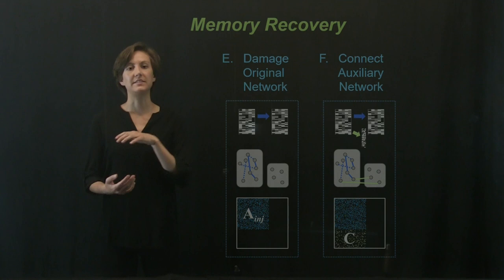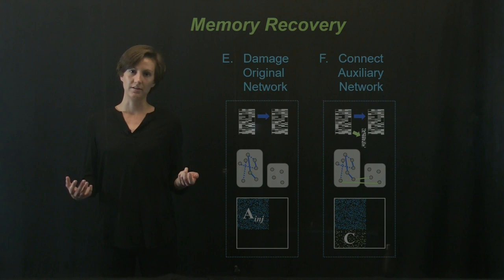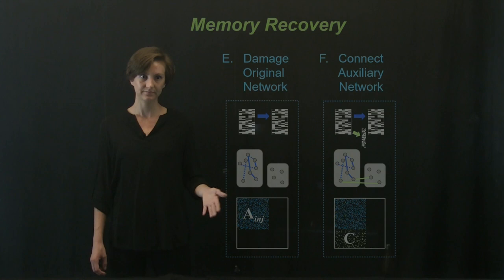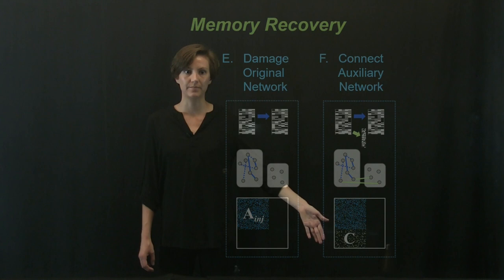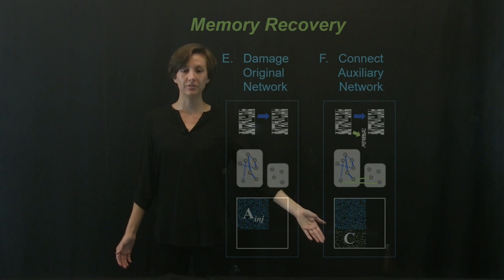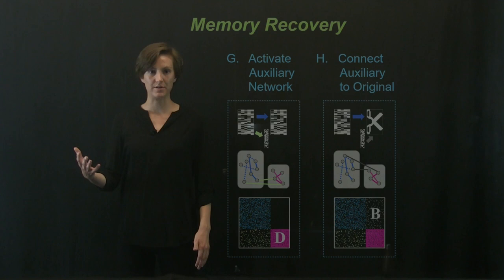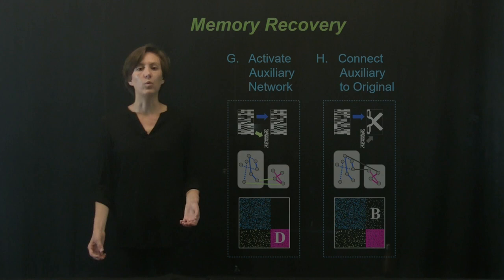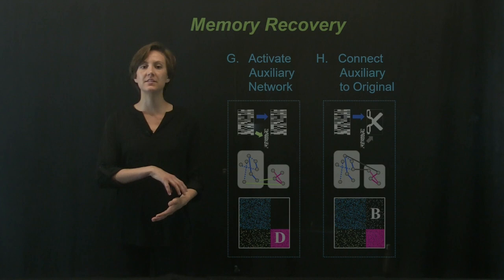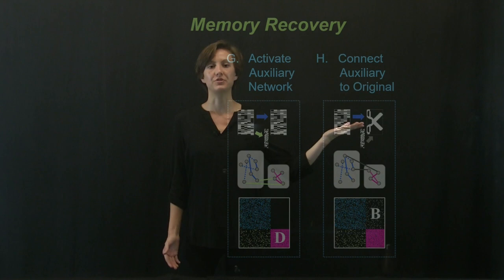The next stage of our simulation was damaging the original network and analyzing memory recovery when the original network was connected to the auxiliary network. First, we damaged the original network by eliminating connections. Next, we connected the auxiliary network to the original network. When the network is damaged, it can no longer retrieve memories if the damage is large enough. However, when the auxiliary network is connected, it is able to retrieve its corresponding memories because the auxiliary network is not damaged. Once the auxiliary network has retrieved its corresponding memory, we turn on connections back to the original network, and the auxiliary network feeds this information back to the original network, and finally the original network is able to retrieve its stored memory.